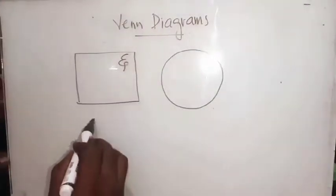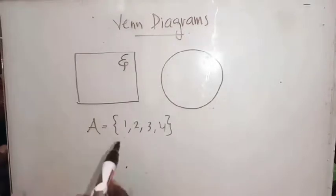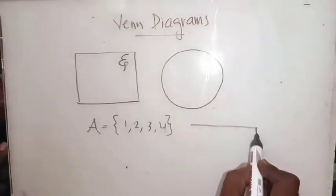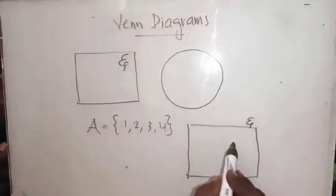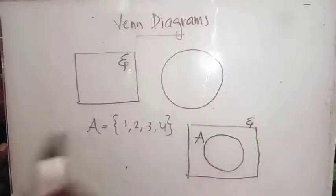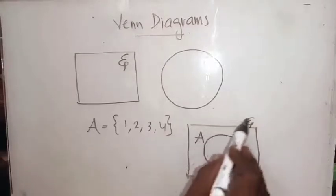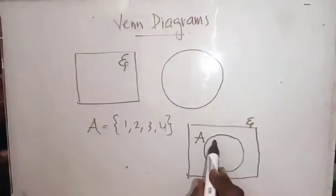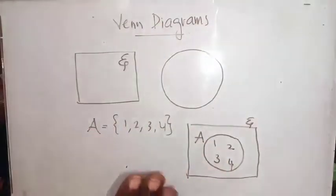Suppose we have set A = {1, 2, 3, 4}. To represent this in a Venn diagram, first draw a rectangle for the universal set. Then inside it, draw a circle — that is set A. Every set is a subset of the universal set, which is why we draw the circle inside. Write all the elements 1, 2, 3, 4 inside the circle. This is the diagrammatic representation of a set using Venn diagrams.